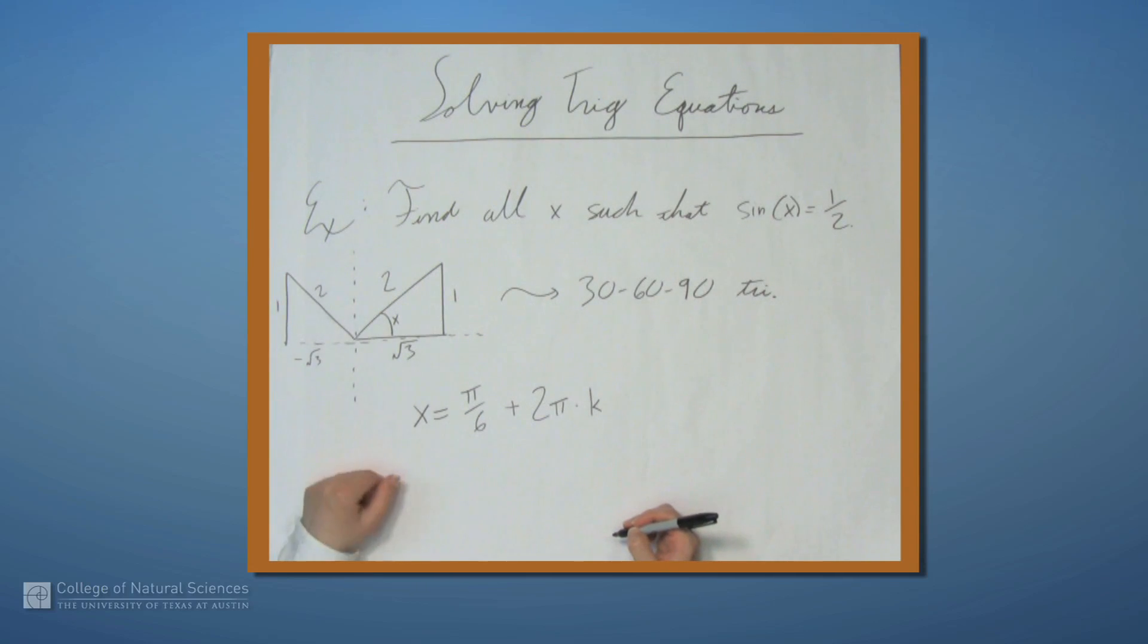But if we flip it over the y-axis, then we get the same sine value. So what is this angle here? Well, this is another candidate. This triangle is also a 30-60-90 right triangle. This angle right here is the 30 degrees, or π over 6. So to get this part of the angle, we can say, well, we take all the way around is π, and then we subtract π over 6. So this angle here is 5π over 6.